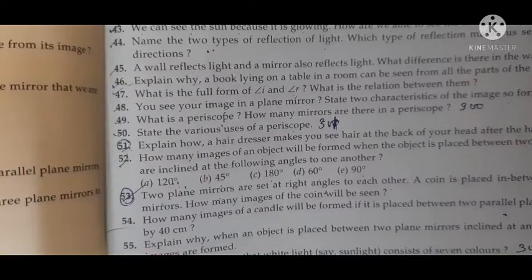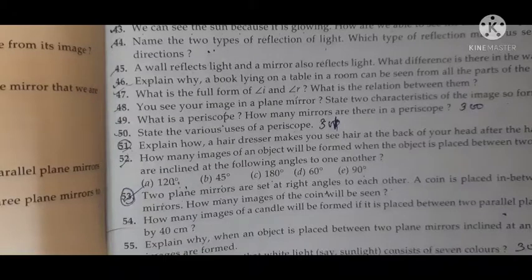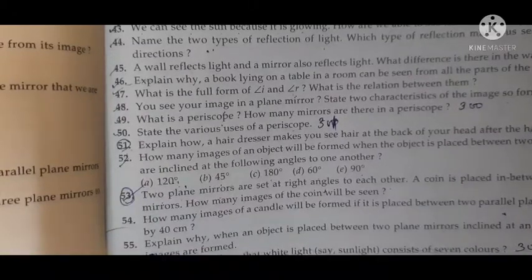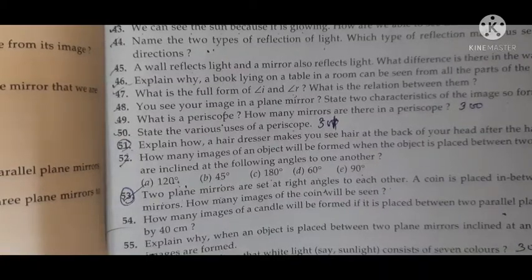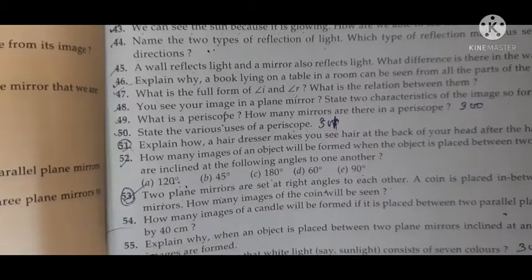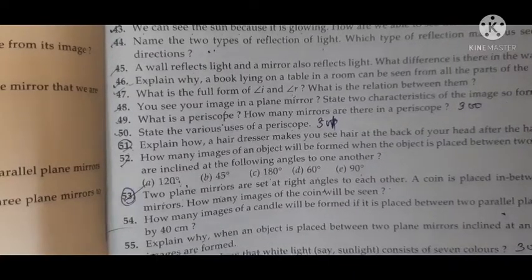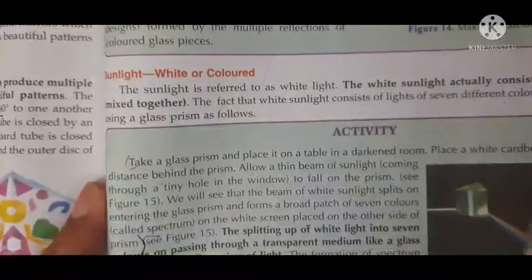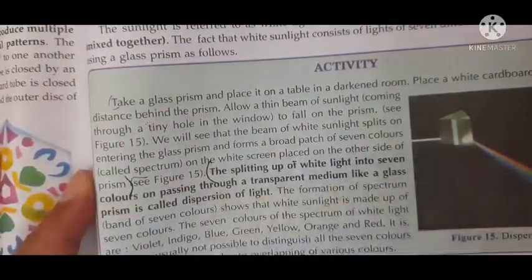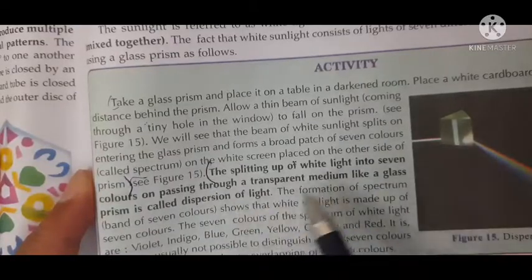Question number 57: What information do you get about sunlight from the formation of a rainbow? We get that white light is made up of seven colors arranged in a pattern called VIBGYOR. What is meant by dispersion of light? Open page number 303 — the splitting of white light into seven colors on passing through a transparent medium like glass is called dispersion of light. A natural phenomenon caused by dispersion of light is the formation of rainbows.